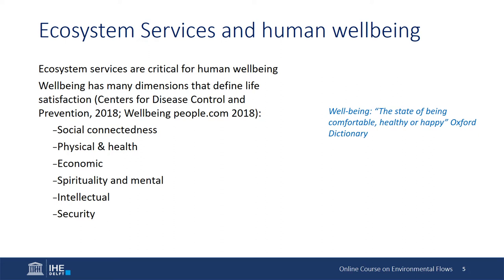The dependency of humans on the environment has brought to the attention of decision makers that the quality of the environment is important for the well-being of people. Well-being is defined as the state of being comfortable, but it involves much more. Well-being covers all the aspects that contribute to the realization of individual and collective goals for physical, economic, mental, and spiritual fulfillment. Water is essential for life and for terrestrial and aquatic ecosystem services to function, so they can provide the services that will sustain society and economic development.